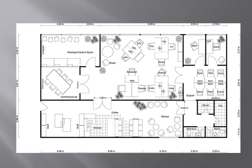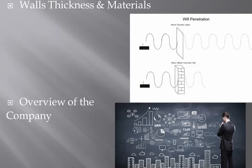For that company, we're definitely going to implement IP phones, local area network, internet, and WiFi coverage. The question about wall thickness and materials is important because the WiFi penetration ratio is different from one material to another. Definitely, all of the walls could be either bricks or concrete, so the penetration ratio is different.